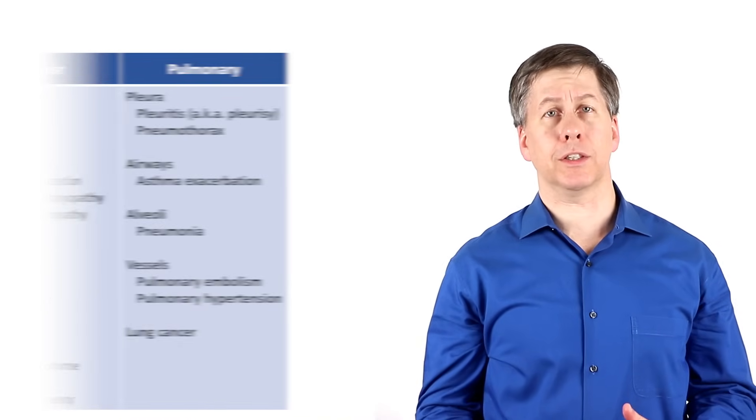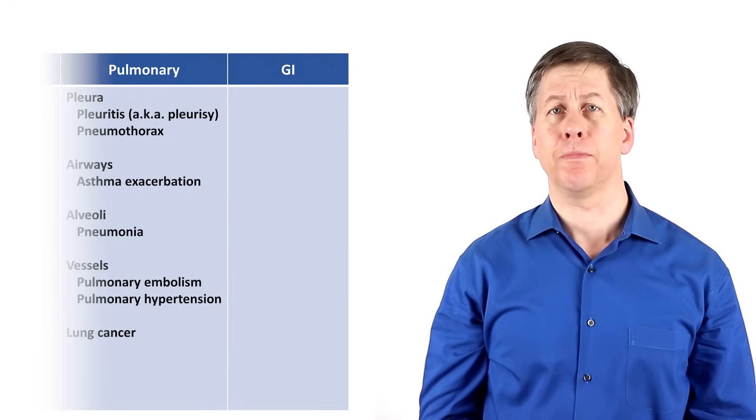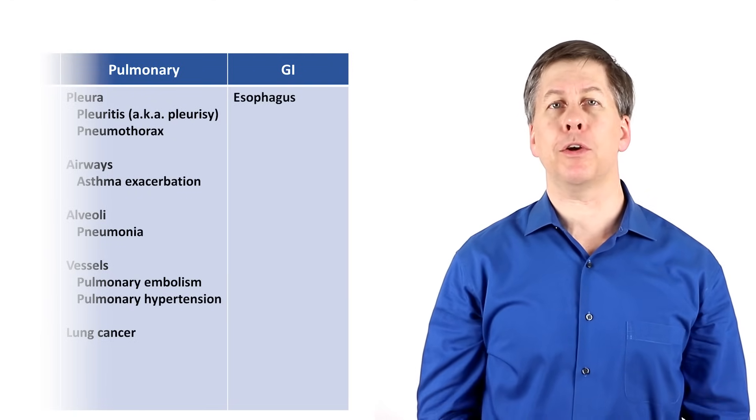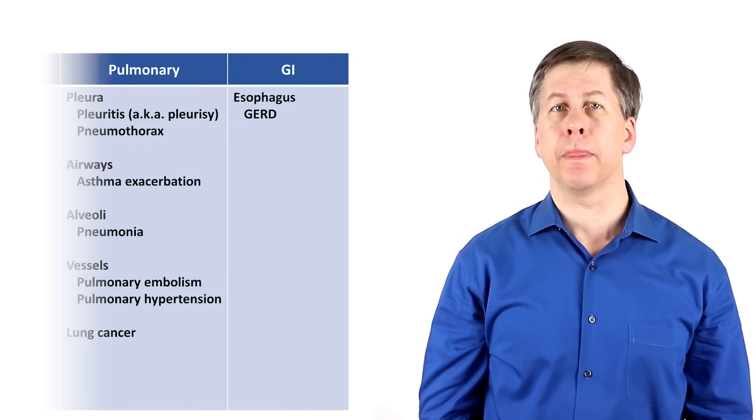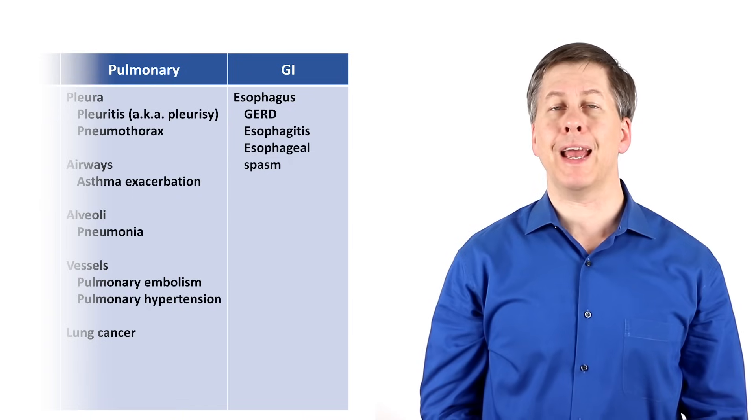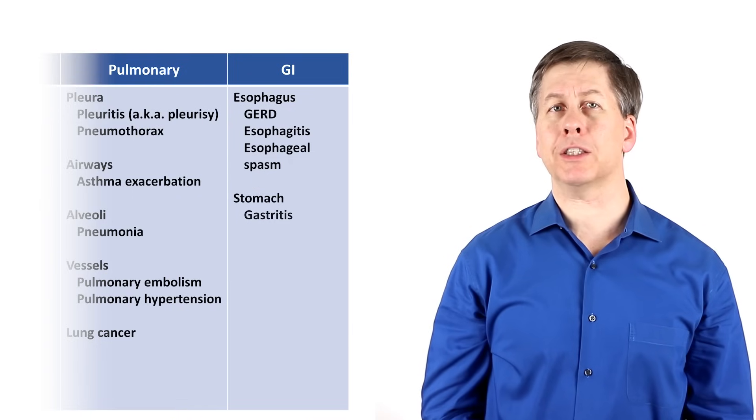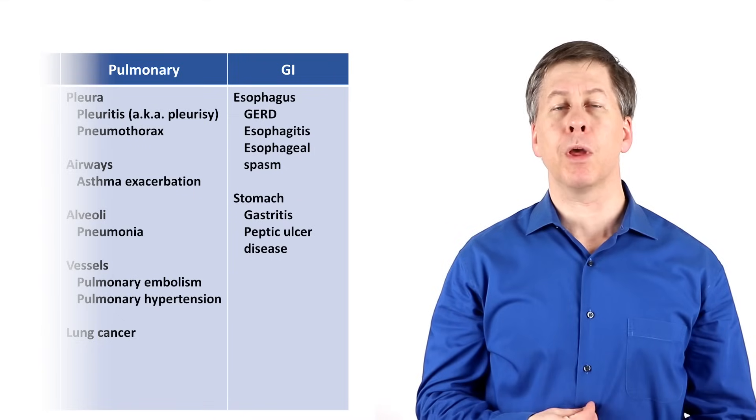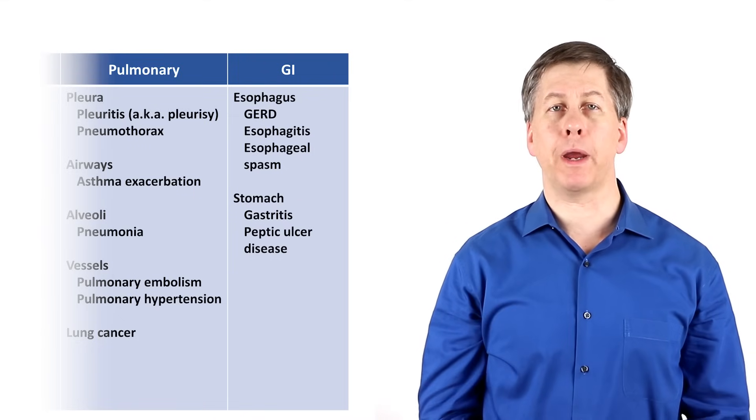The next relevant organ system to consider is the GI system. In the esophagus, chest pain could be from gastroesophageal reflux disease, better known by its acronym GERD, esophagitis, or esophageal spasm. And in the stomach, although gastritis and peptic ulcer disease more commonly cause epigastric pain, they can on occasion present with chest pain instead.